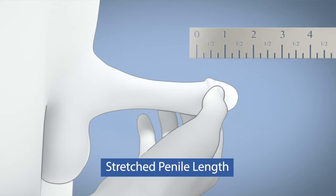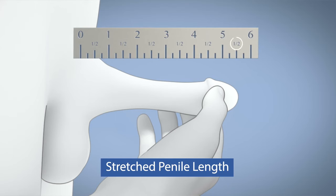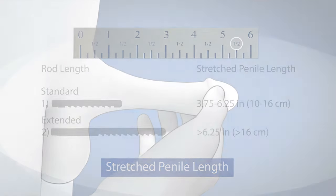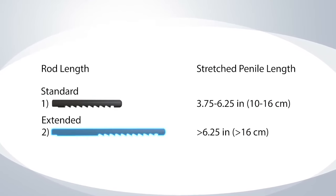First, choose the appropriate extension rods based on your stretched penile length. Ensure that the ruler measures the full length of your flaccid penis by pushing the end of the ruler into the fat pad located at the base of the penis. The Restorex device comes with the standard rods assembled, and for penile lengths greater than 6.25 inches or 16 centimeters, the extended rods are in the Restorex box.